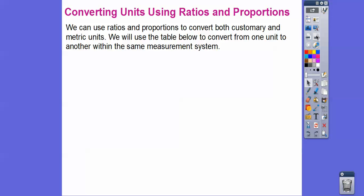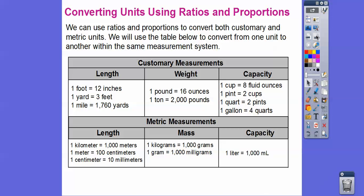We can use ratios and proportions to convert both customary and metric units using the table below. One foot equals 12 inches; one yard equals three feet; one mile is 1,760 yards; one pound is 16 ounces; one ton is 2,000 pounds. For cups to fluid ounces, multiply by eight. For kilograms to grams — say seven kilograms — multiply by 1,000.